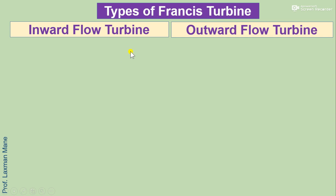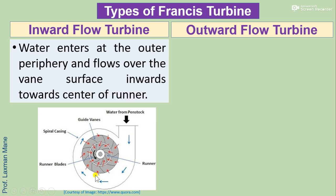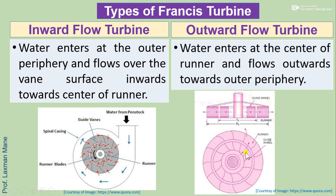First we will see types of Francis turbine. There are two types based on the direction of flow: inward flow turbine and outward flow turbine. In an inward flow turbine, water enters at the outer periphery of the runner and flows inwards toward the center. In an outward flow turbine, water enters at the center and flows outwards toward the outer periphery.